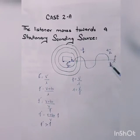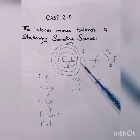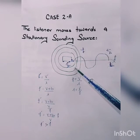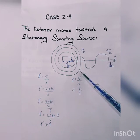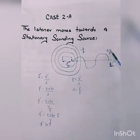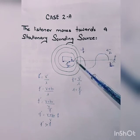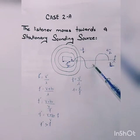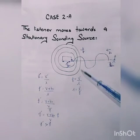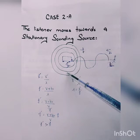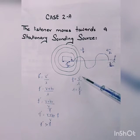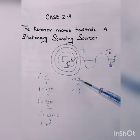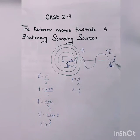Now when the sounding source is at rest but the listener moves with speed V towards the stationary source, the number of waves received by this listener increases. There is a relative increase in the apparent speed of sound due to the motion of the listener. The listener moves with speed B and the sound speed is V, so there is an apparent increase in speed — the new speed becomes V plus B, the speed of sound plus the speed of the listener.